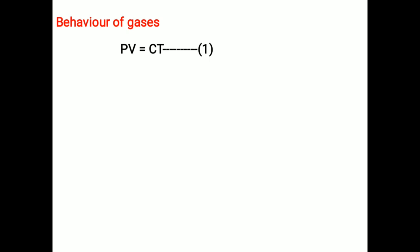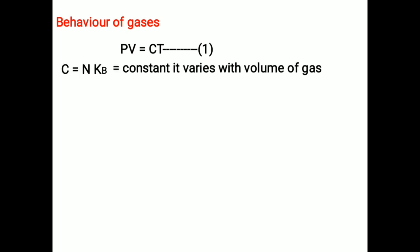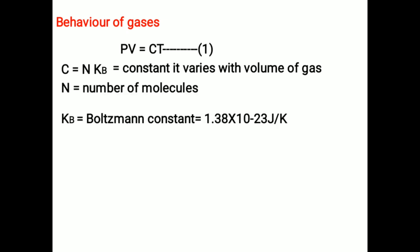Behavior of gases. Gases at low pressures and high temperatures approximately satisfy a relation between their pressure, temperature, and volume, given by PV equals CT — equation 1. This is the universal relation satisfied by all gases, where P, V, T are pressure, volume, and temperature respectively, and C equals NKB is the constant, which varies with the volume of gases. N is the number of molecules and KB is Boltzmann constant, equal to 1.38 × 10⁻²³ Joule per Kelvin.